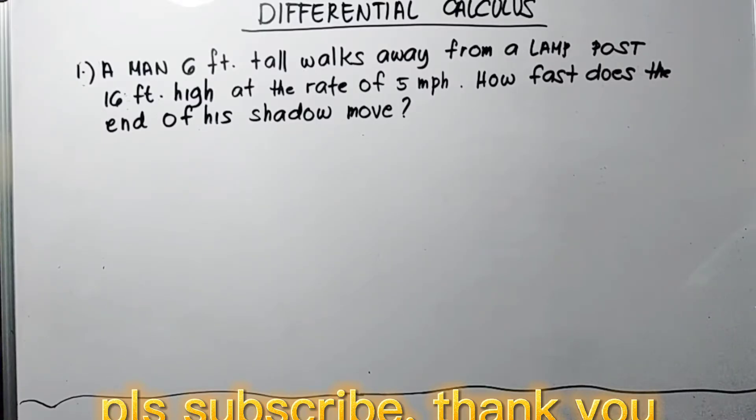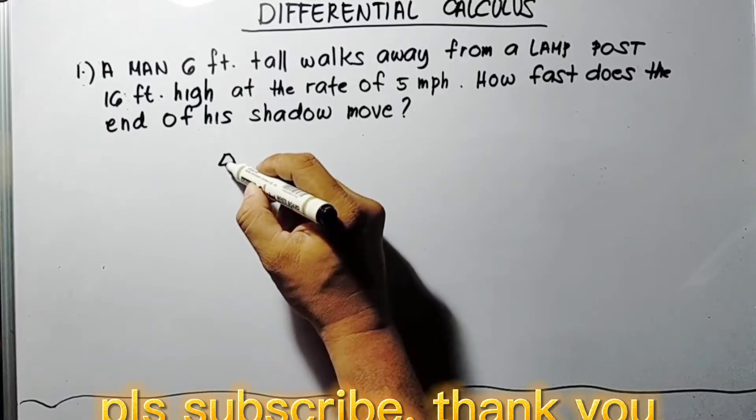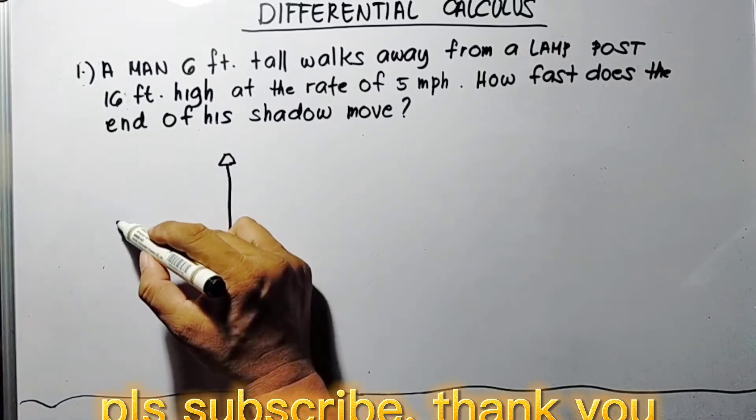How fast does the end of his shadow move? So first we draw the problem. This is the lamppost. The man walks away, so this is the man.